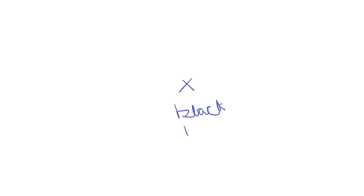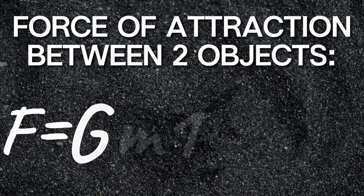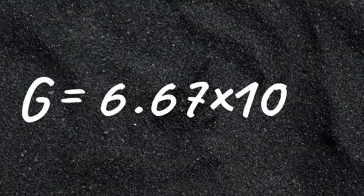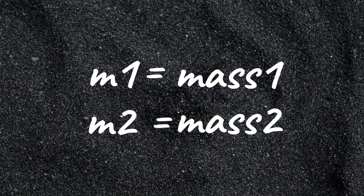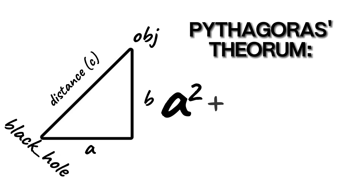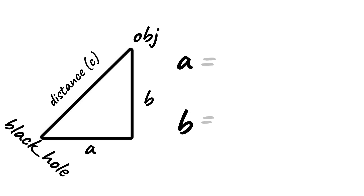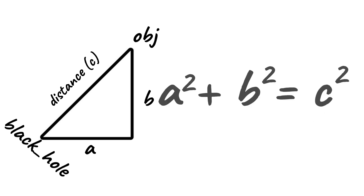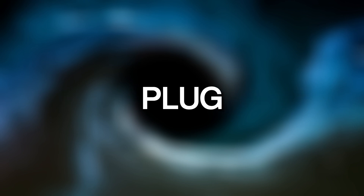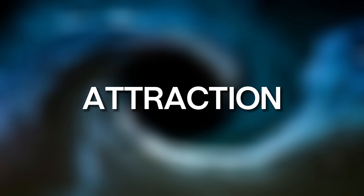To calculate the force of attraction between the black hole, which has a centre of mass at zero, zero, and the object, I had to use this formula: F equals G M1 M2 over R squared, where G is the gravitational constant of 6.67 times 10 to the minus 11. M1 and M2 represent the masses of the two objects, and R represents the distance between them. I can calculate the distance with Pythagoras' theorem: A squared plus B squared equals C squared. I can calculate A and B because they were just the horizontal and vertical differences in coordinates. By substituting A and B for those values, I had the distance R, which I can now plug into the formula. I set the mass of the object to its width multiplied by its height, and the mass of the black hole to 1 times 10 to the power of 13. Now I can plug those two values into the formula and calculate the force of attraction.